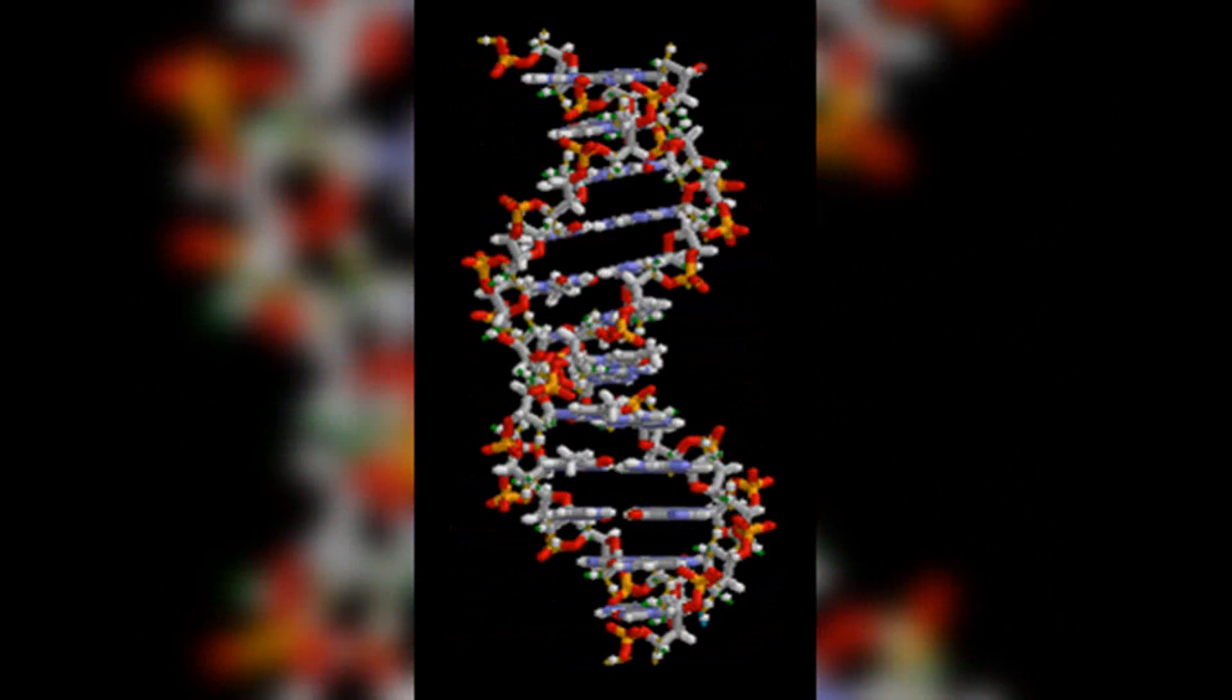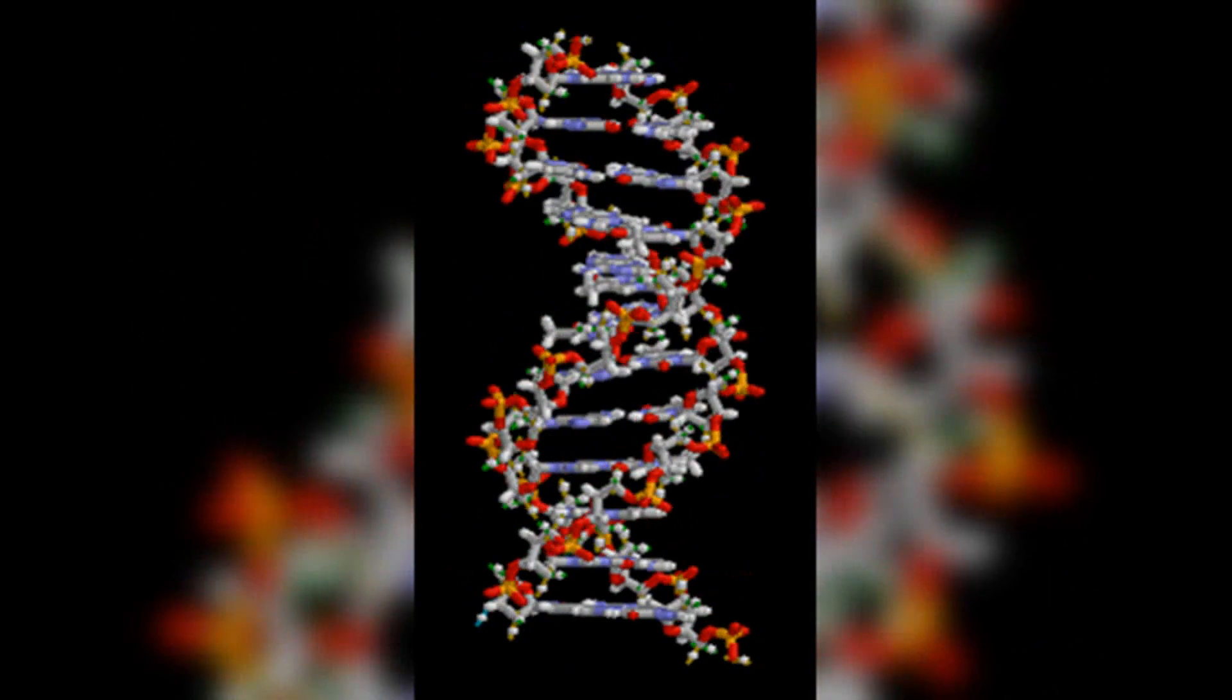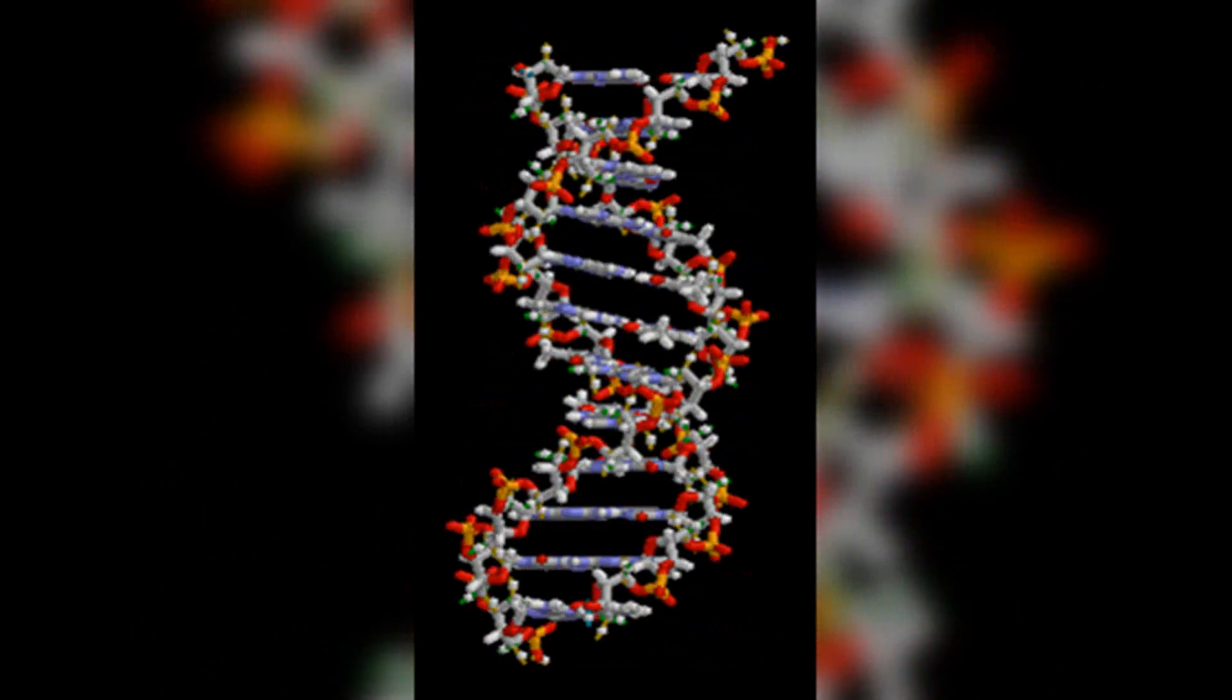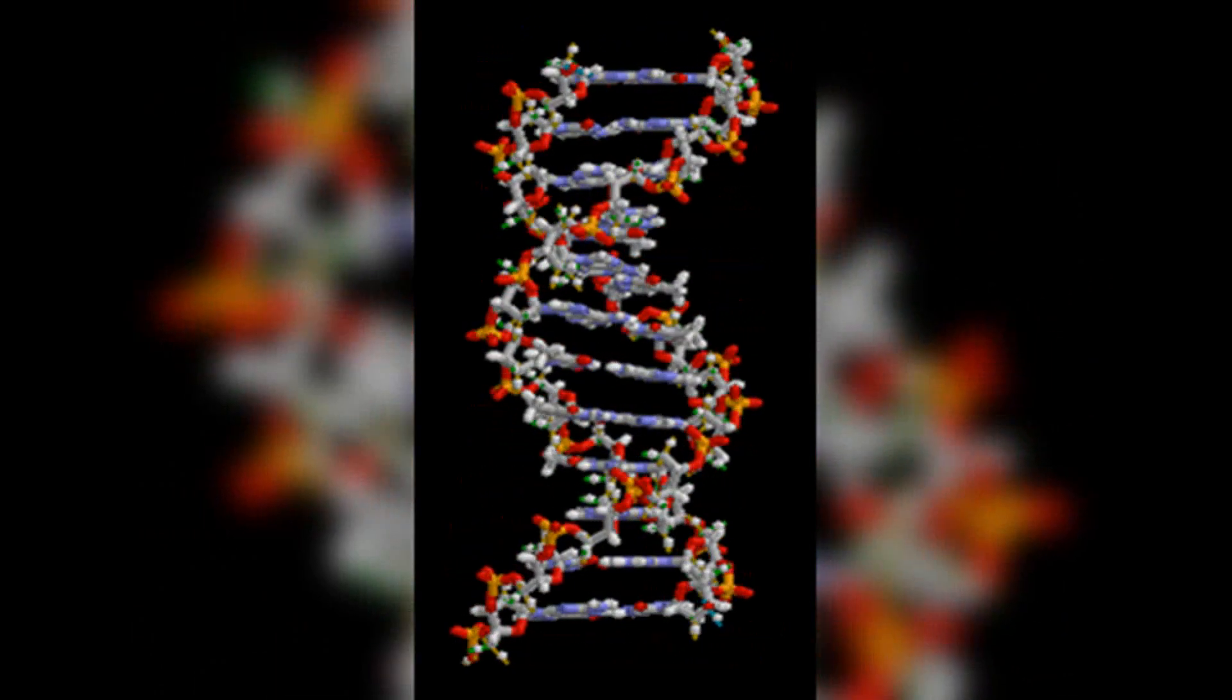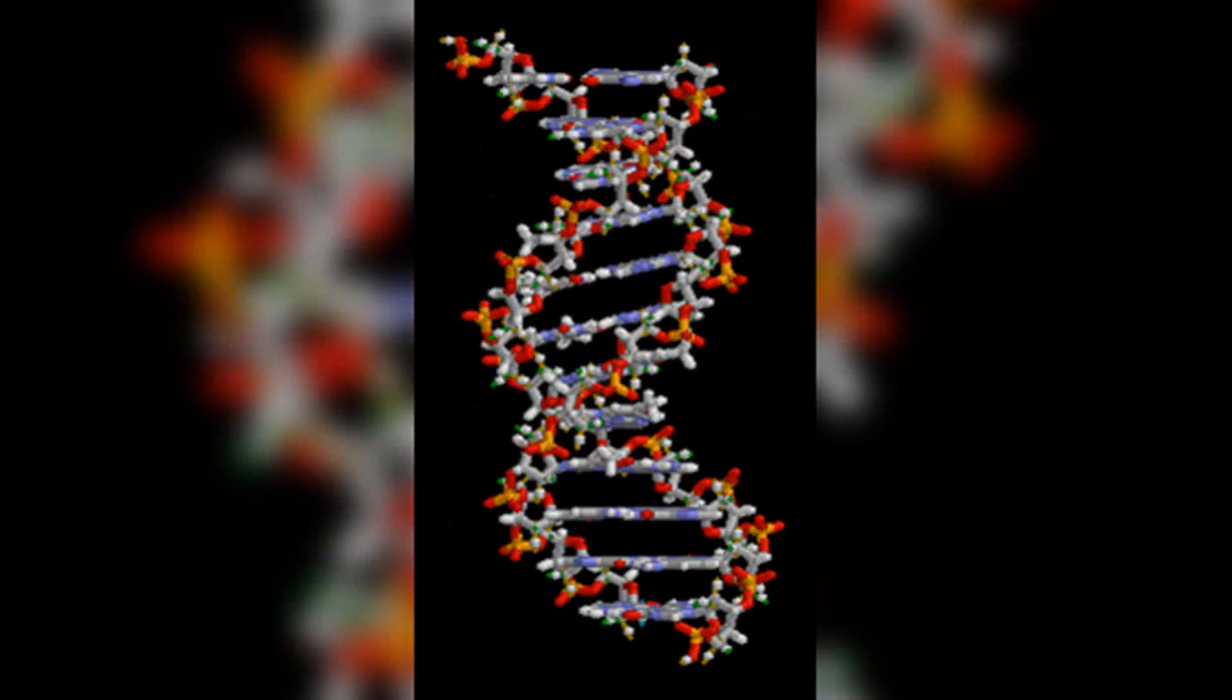Junk DNA, or non-coding DNA, is found in various forms of life, including but not limited to humans. The human genome is estimated to have a large portion of non-coding DNA, which includes regions that do not code for proteins.